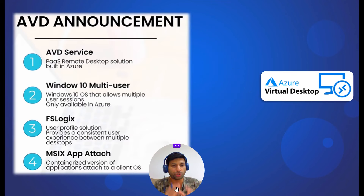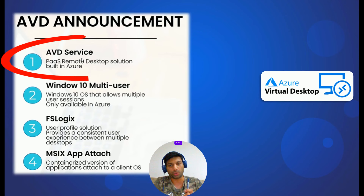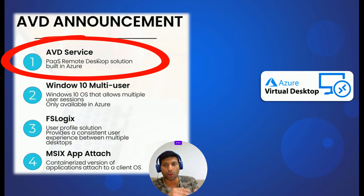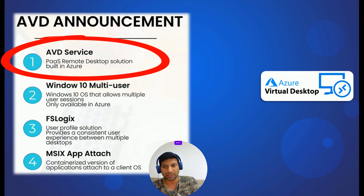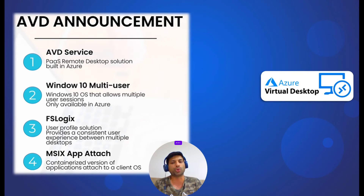There were four technologies that were part of the initial announcement. The first one was the AVD service — Azure Virtual Desktop service. This is a Platform as a Service, or PaaS, offering that allows remote access to the Azure Virtual Desktop environment. The Azure Virtual Desktop service facilitates the connection between the virtual desktop, the application, and the end users.